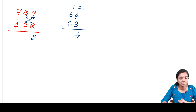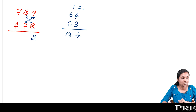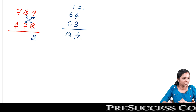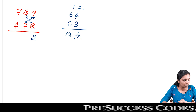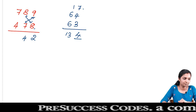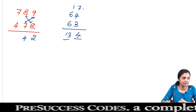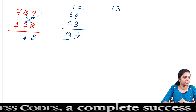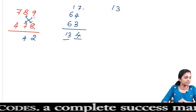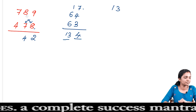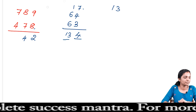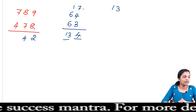6 plus 6 is 12, 12 plus 1 is 13. So we get the number 134 — write the digit 4, carry 13.